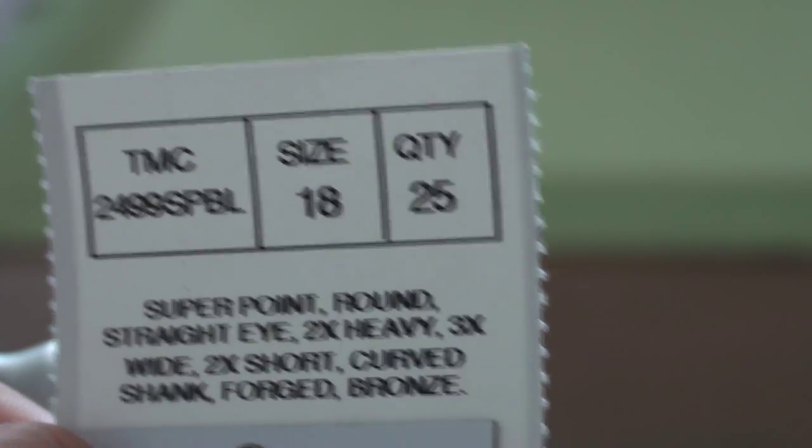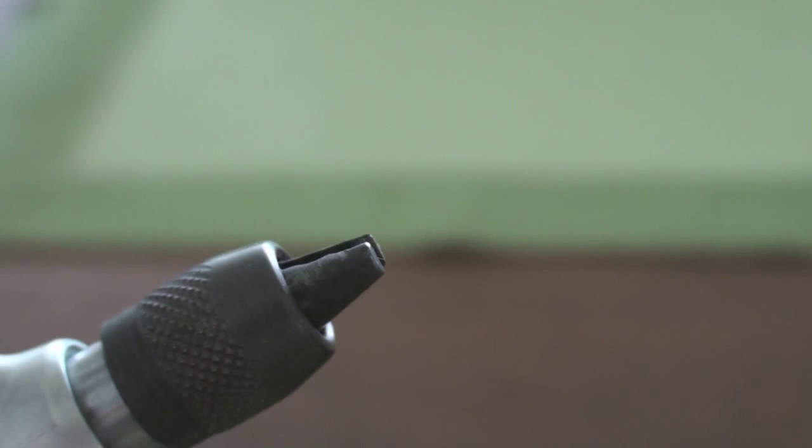I tie these mostly on cheap hooks, Daiichi, but actually all I have sitting around today are nicer Tiemco hooks. Today we're going to tie this glow bug on a size 18, $24.99 SPBL. But you can tie it on any scud hook or egg hook and I usually use as cheap as I can find it.